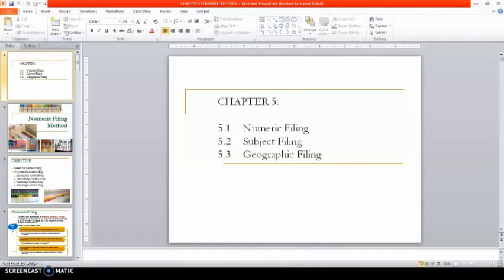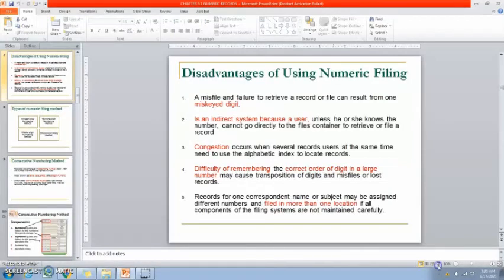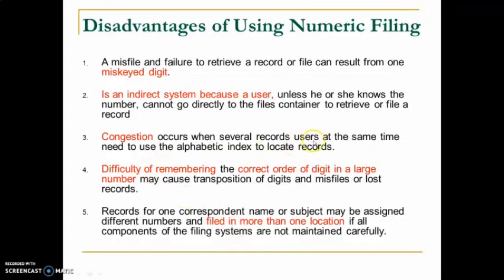Another disadvantage is congestion — when several users access the system at the same time, it can cause crowding at a particular shelf or drawer, especially in a consecutive numbering system. With other systems like terminal digit or middle digit, congestion is less of an issue. Additionally, longer numbers become harder to remember in the correct order.